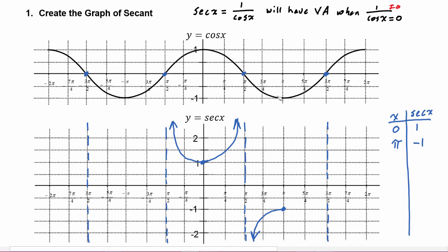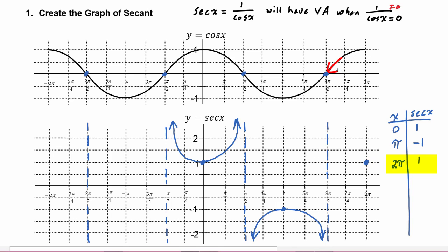And the same thing will happen as the graph of cosine goes towards three pi over two — the y values are going towards zero but again through negative numbers, so the y values of secant will go to negative infinity. If we plug in two pi, two pi is coterminal with zero, so we know the value of the secant will be one. And as the y value of cosine approaches zero, the y value of secant will approach infinity.